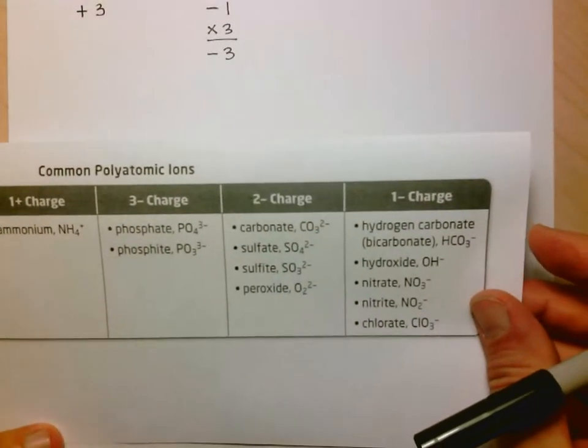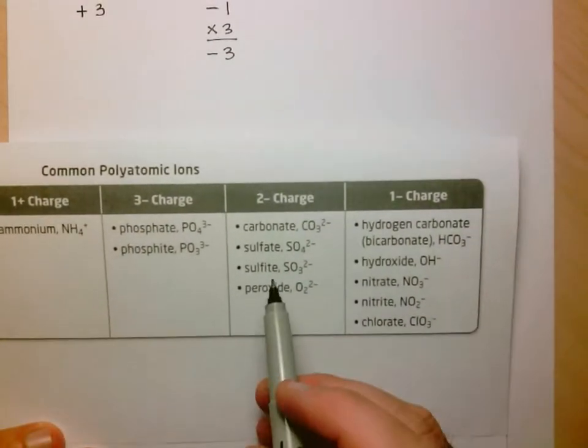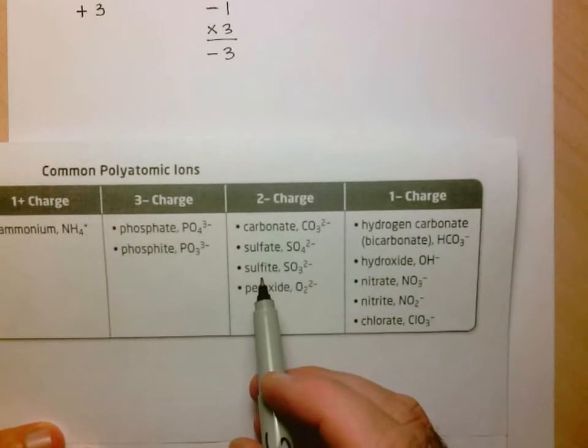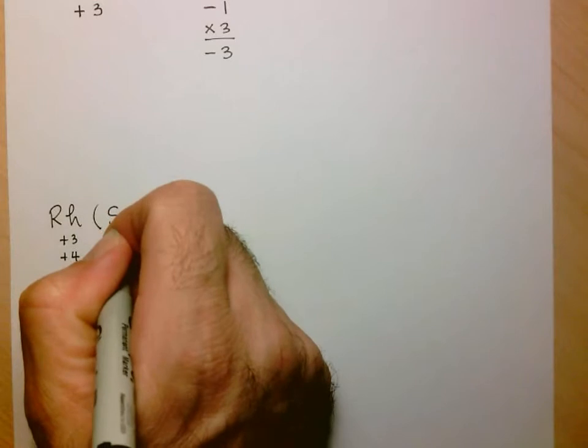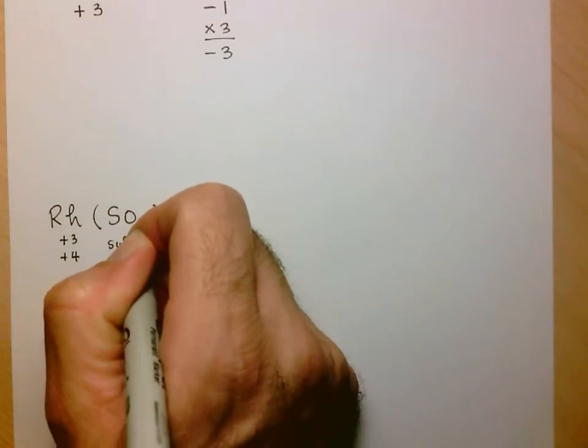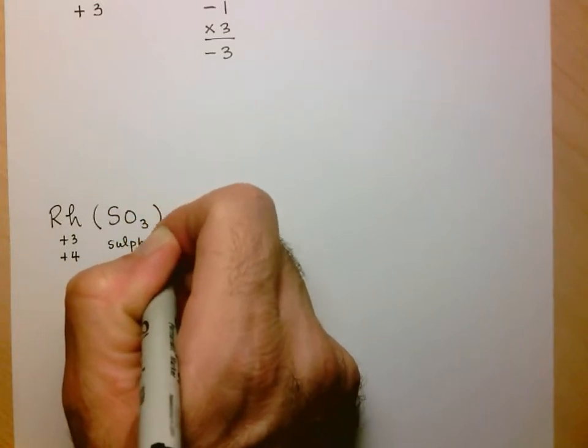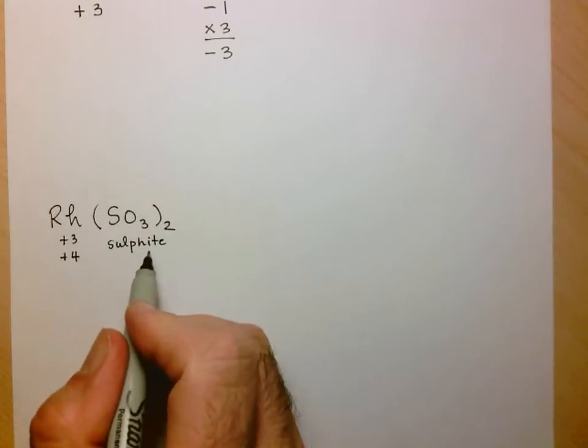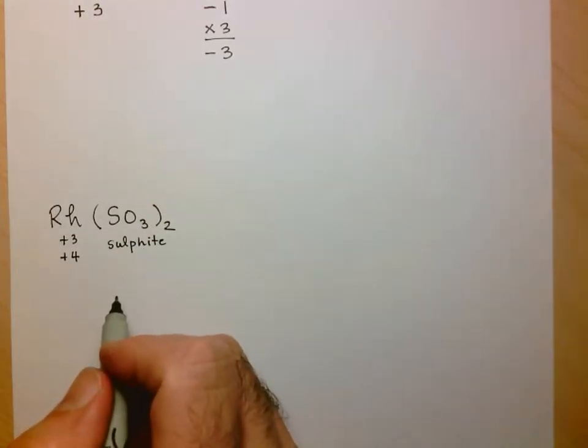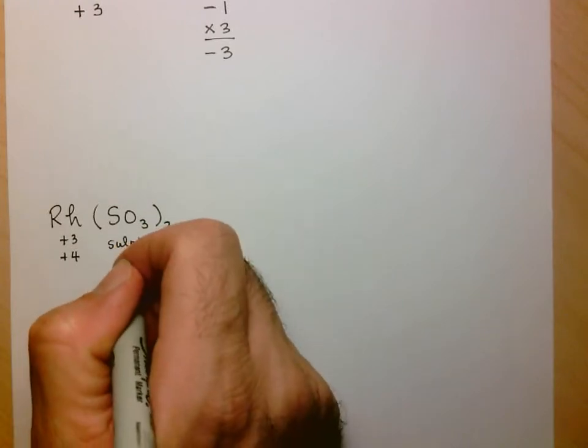And we look here, and we see that SO3 is the sulfite ion, and it has a charge of minus 2. So what I might do here is indicate the name, so I don't have to look it up again. So SO3 is sulfite, notice not IDE, so again, telling me that this is a polyatomic ion, and it has a charge of minus 2.